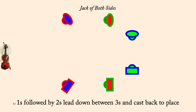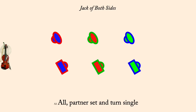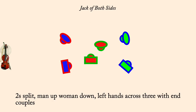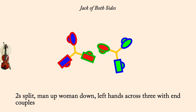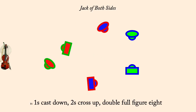Partner set and turn single. Ones split — man up, woman down — left hands across three with end couples. Ones cast down, twos cross up, double full figure eight.